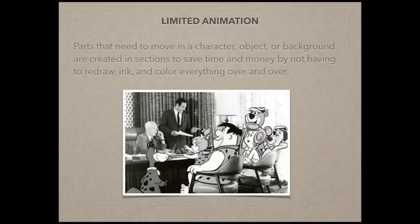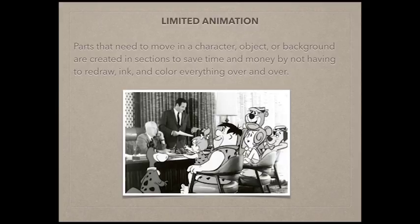They were able to create characters or scenes and not have to redraw, re-ink, and recolor everything over and over again. For example, you can have a section of a character, his arms could be removed, and that character can stay on screen — we just reanimate the arm moving. This was used because the budget for television animation was not the same as for theatrical shorts, so they had to find a way to save money.